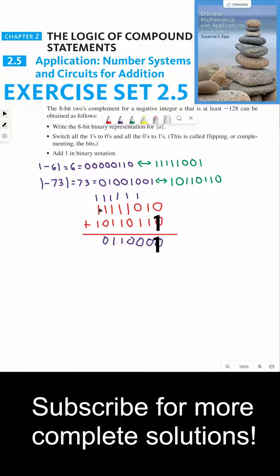Lastly, we need to do 1 plus 1 plus 1, which is 11. But we can't carry this last bit here because we only have 8 bits. So we discard this last carry and we're left with 10110000.